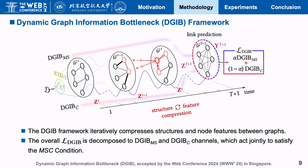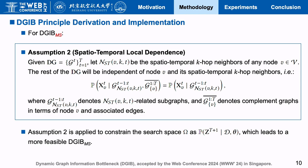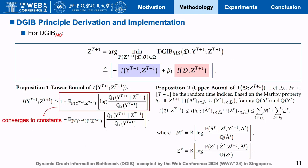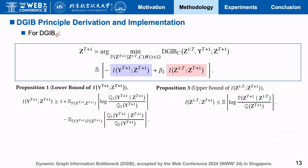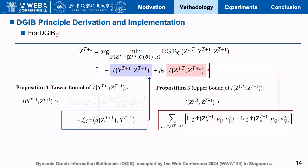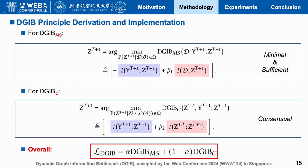The DGIB framework iteratively compresses structures and node features between graphs. For both channels, we propose their derivations and implementations. In general, the DGIB-MS channel learns minimum sufficient representations, whereas the DGIB-C channel guarantees their consensual condition. We use the trade-off hyperparameter alpha to combine both channels.